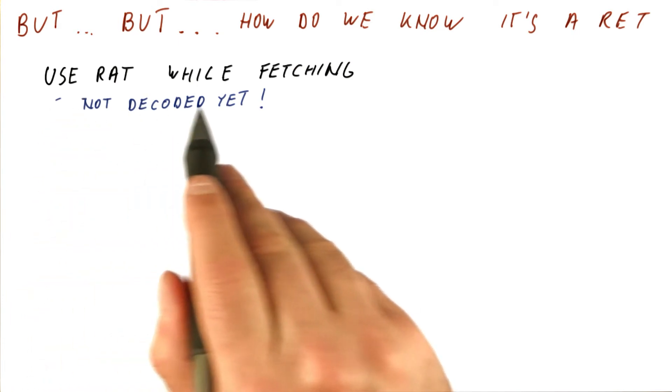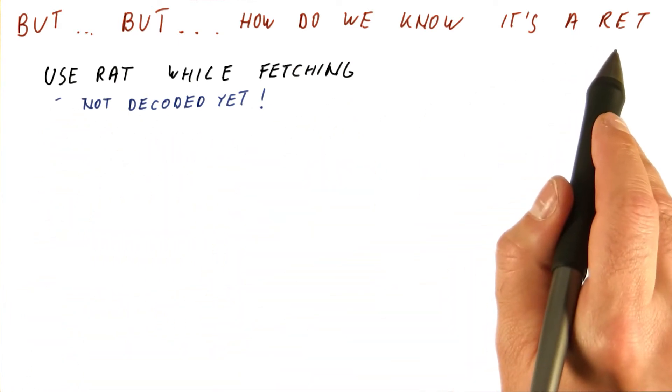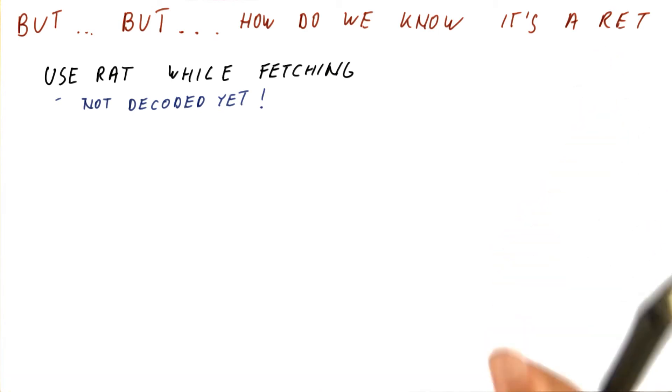So the problem is that we are using the return address stack while fetching the instruction. It's not been decoded yet, so we don't know it's a return instruction yet. So how do we do it?